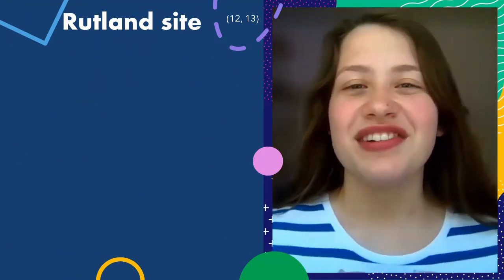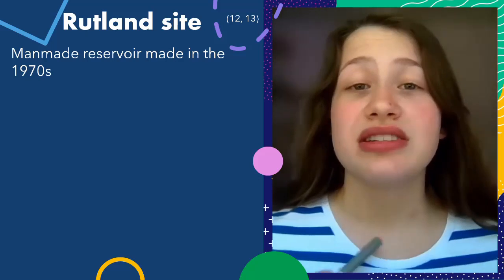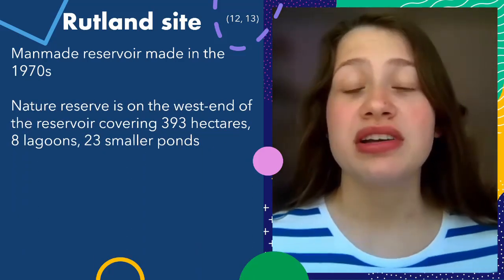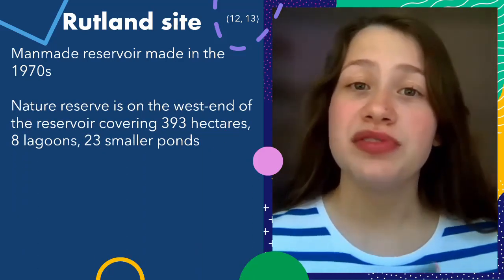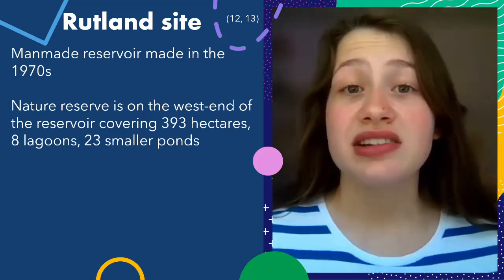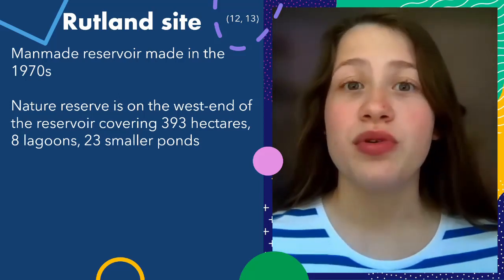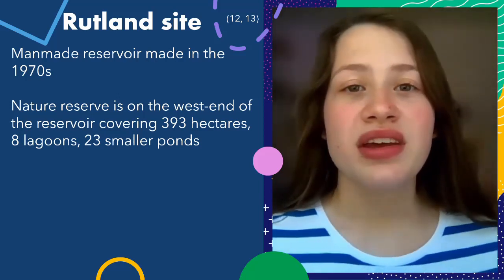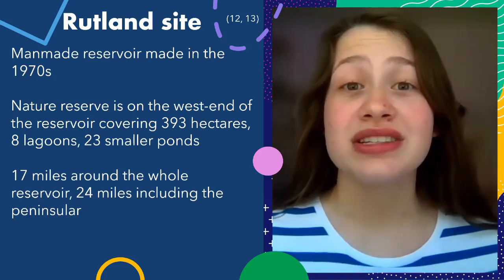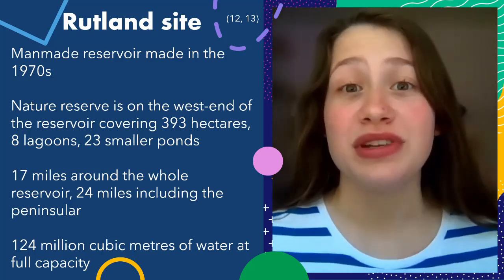Now for some fun facts about the Rutland site. It's a man-made reservoir built in the 1970s in the smallest county in Britain. When being created, a nature reserve was put into the design, found on the west end side of the reservoir. It covers 393 hectares, 8 lagoons, and 23 smaller ponds, as well as many other important habitats. If you were to walk around the whole thing, including the peninsula, that would be 24 miles, and at full capacity it can carry 124 million cubic metres of water.